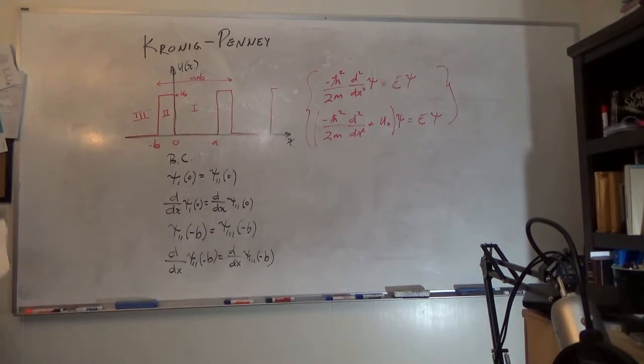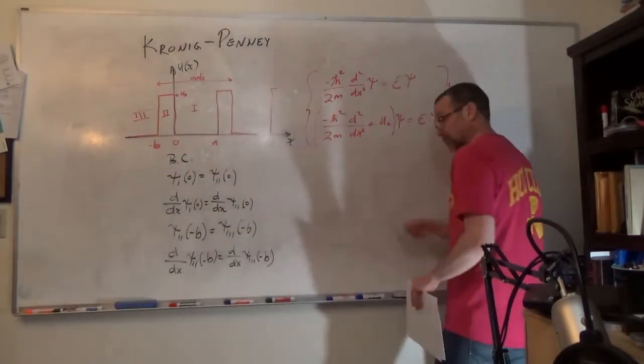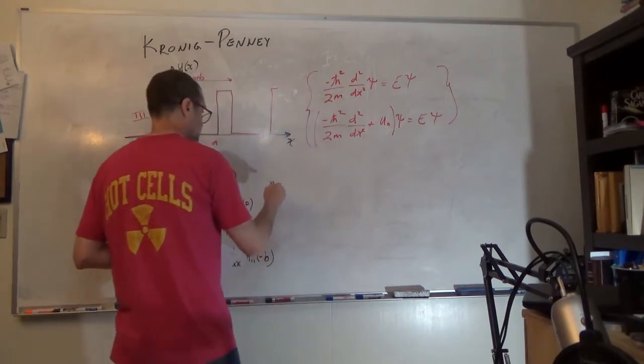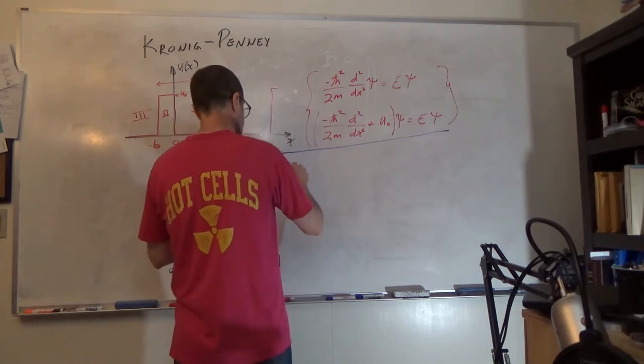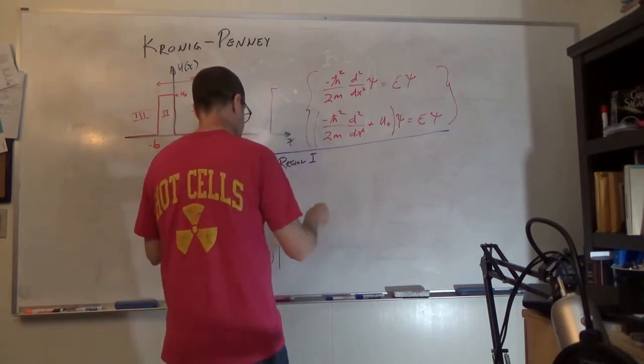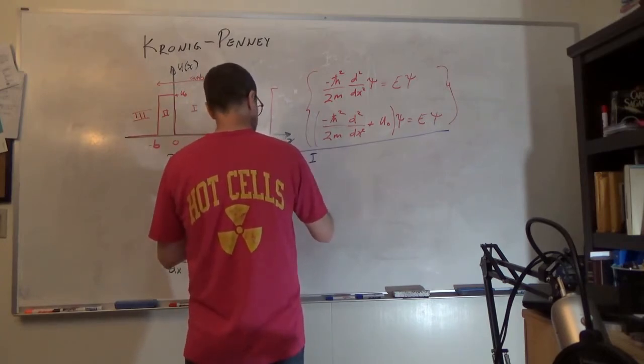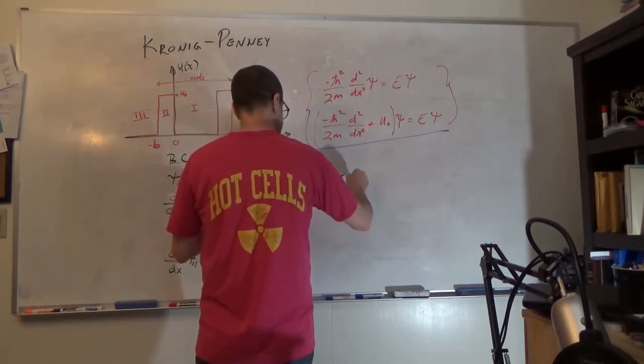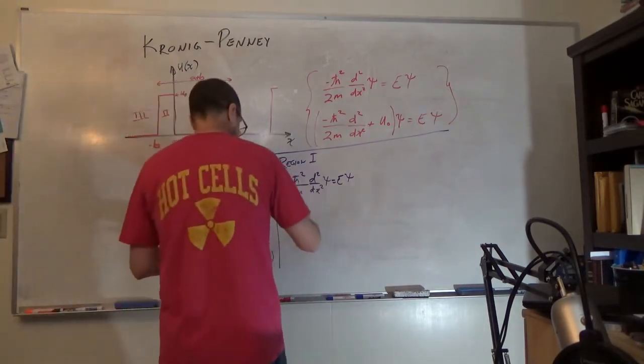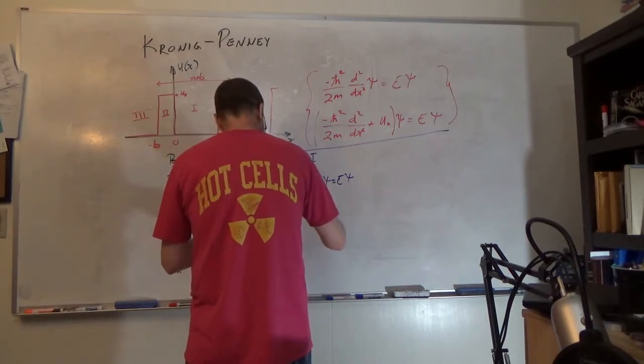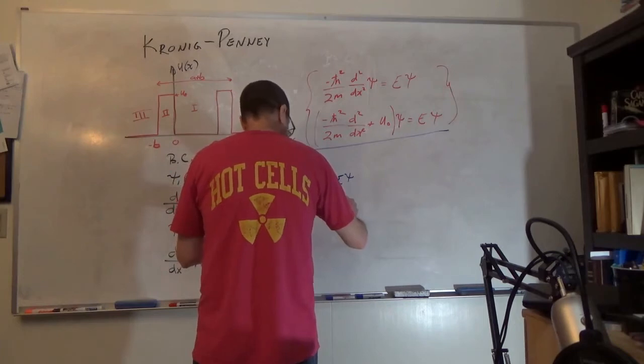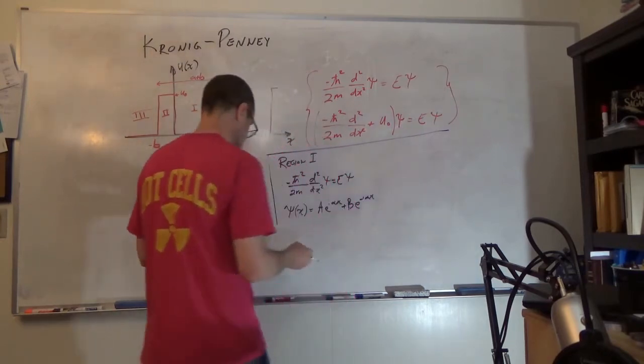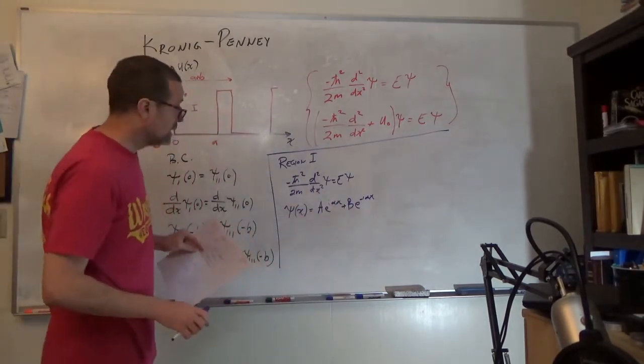Let's solve region 1. Region 1: negative h bar squared over 2m d dx squared psi is equal to E psi. We know the answer. It's free electrons. It gives us psi of x is equal to a e to the i alpha x plus b e to the minus i alpha x. These coefficients, we're going to have to use the boundary conditions to find those.